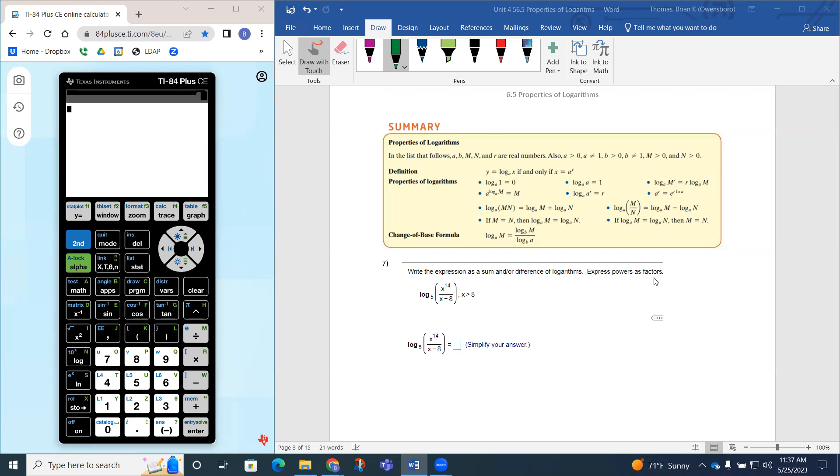So we have, again, the same directions. So we have the log of x to the 14th divided by x minus 8, base 5 is our expression.